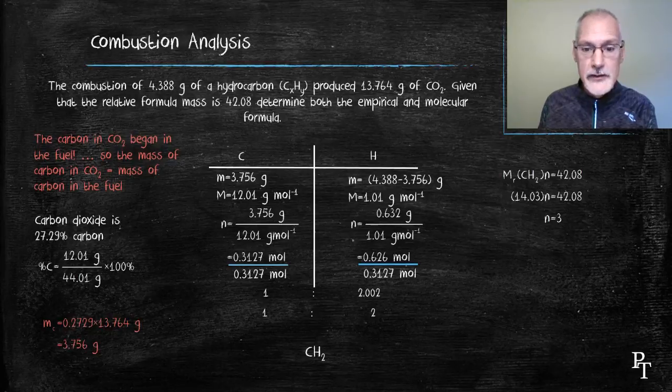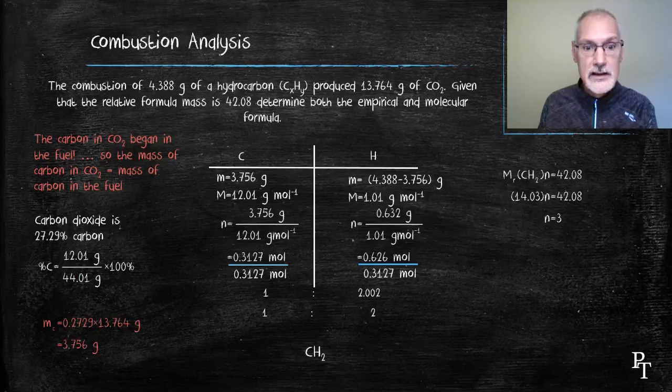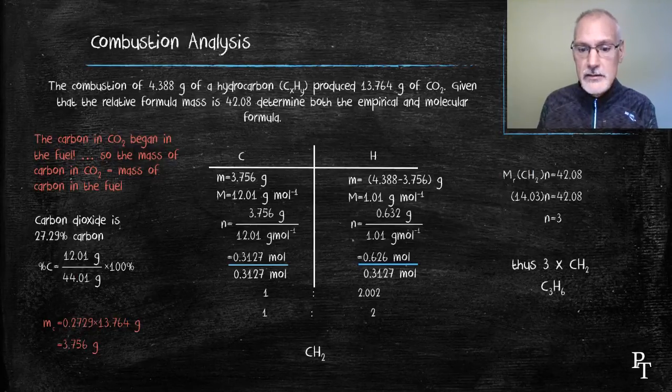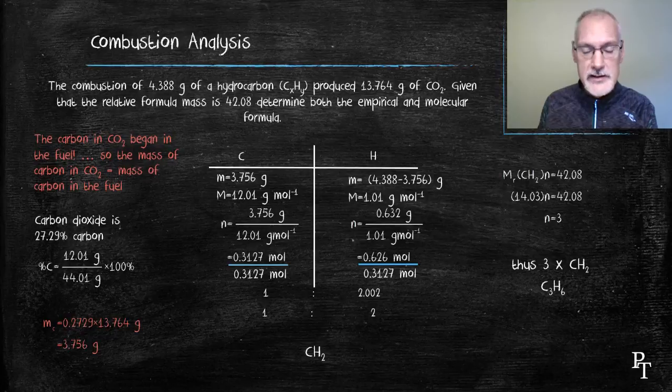The molar mass of CH2 comes out to be 14. 14 times n must equal 42. n equals 3. So I know my resulting product must have 3 CH2 units in it, and thus its formula must be C3H6.